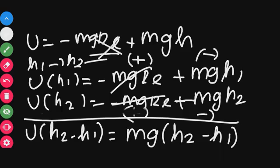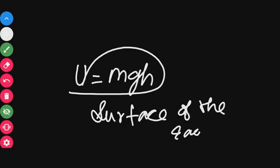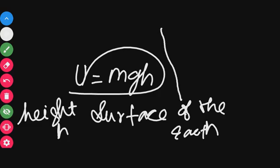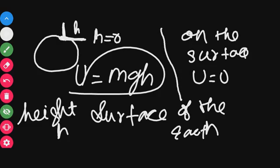The gravitational potential energy stored in a particle of mass m at height h from the surface of the Earth can be taken as m g h near the surface of the Earth. This formula is valid only near the surface. At the surface where h equals 0, U becomes 0. This is all about gravitational potential energy near the surface of the Earth.